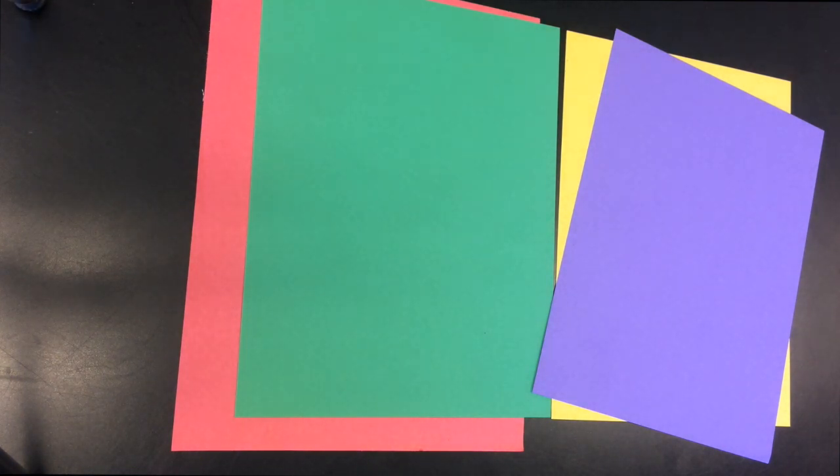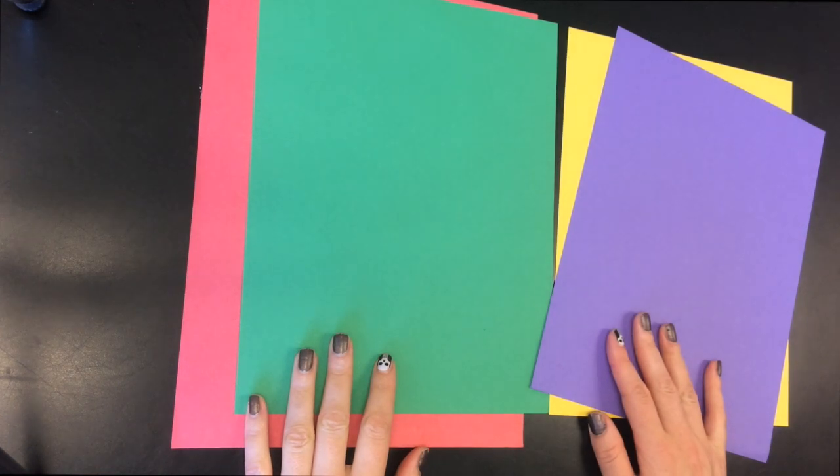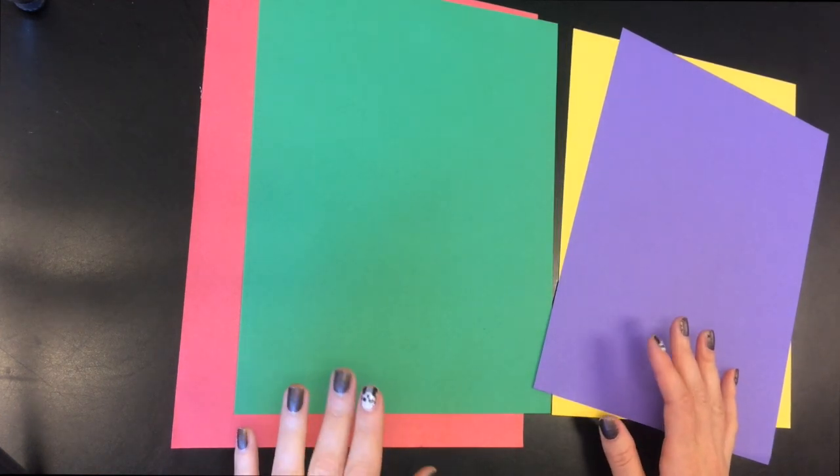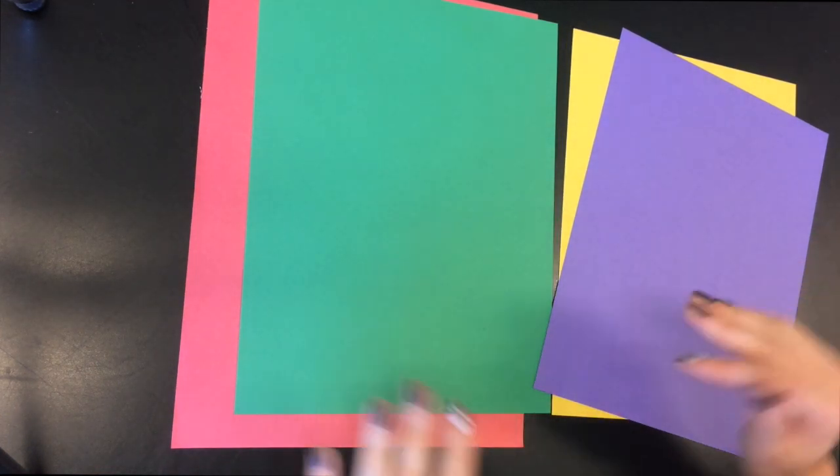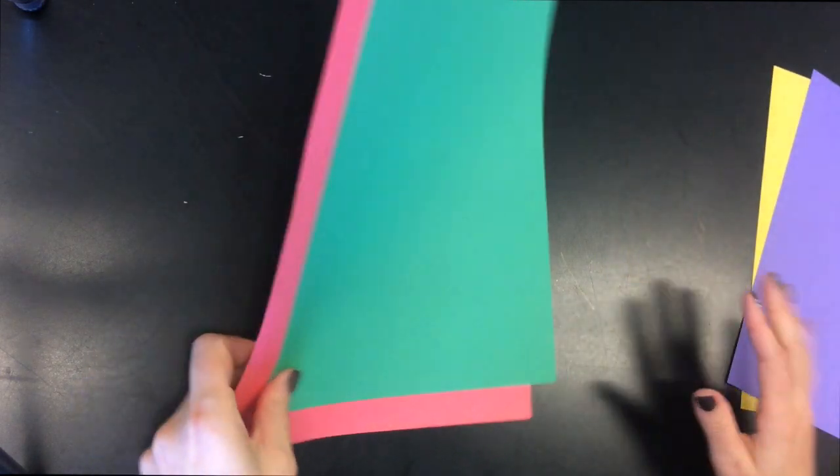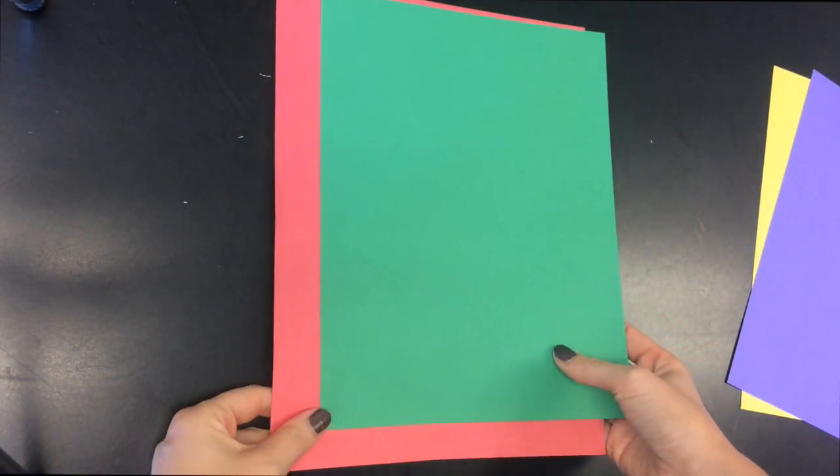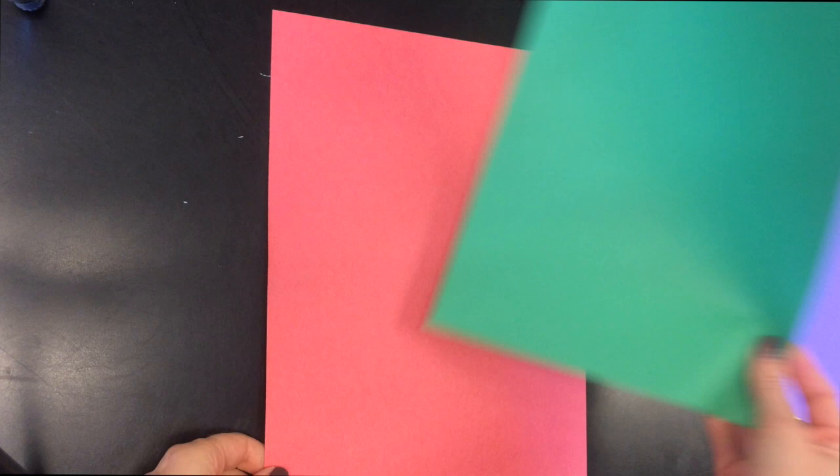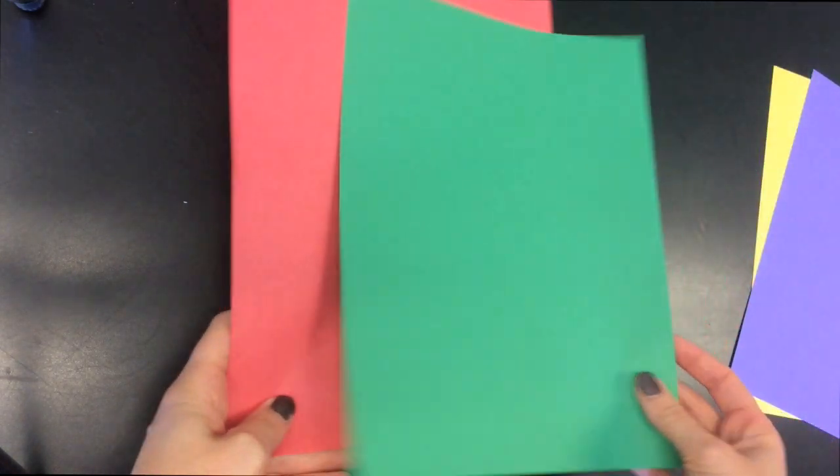Hello boys and girls, Miss Miller here today. We are going to learn about complementary colors, which are colors that are across from each other on the color wheel. So the first pair of complementary colors that is across from each other on the color wheel is green and red.